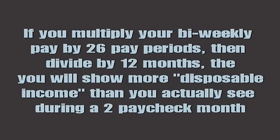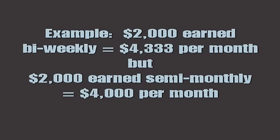Instead of having just two pay periods in a month, you're really having two plus a percentage. When we do a budget using bi-weekly pay periods, the amount of money you're seeing every month in our budget — when you do an average — is actually more on paper than you actually see in reality. For example, you may see two thousand dollars from two monthly paychecks, but when you average it out over the course of a year that may end up being twenty-three hundred or twenty-four hundred dollars.